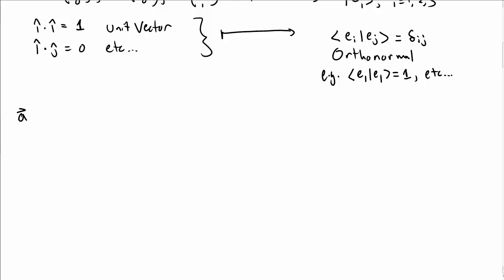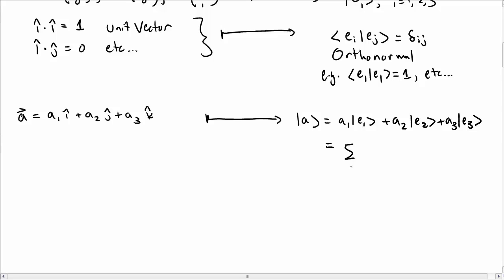If I were to write out my vector as a1 i-hat plus a2 j-hat plus a3 k-hat, I can just write that in bra ket notation in terms of my basis vectors as such. Or a more compact way of writing that is to write it as a sum over i, a_i ket e_i for i goes from 1 to 3.